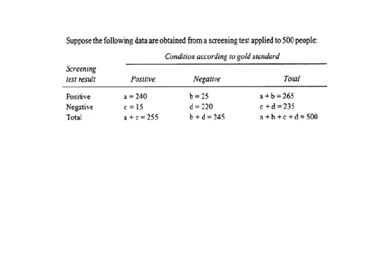Let's pull up a sample practice problem to practice these calculations. Suppose the following data are obtained from a screening test applied to 500 people total. Our two-by-two table is already set up — columns signify the outcome (positive or negative) and rows signify the screening test results (positive or negative), with totals on both sides. We have six calculations, starting with sensitivity.